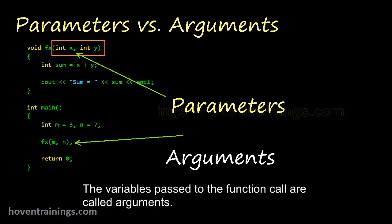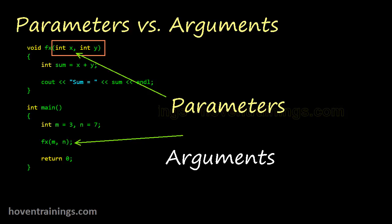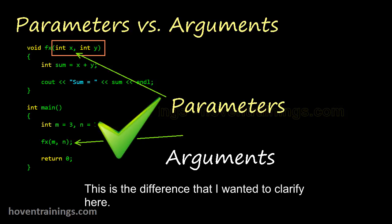The variables passed to the function call are called arguments. In this case the identifiers m and n are called arguments. This is the difference that I wanted to clarify here.